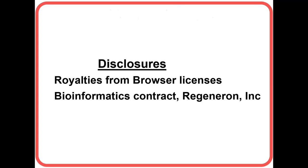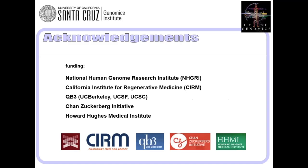We have some disclosures: we get royalties from the sale of browser licenses and we have a contract with a company for which we built some software and data sets, most of which wind up in the browser anyway. I want to start with acknowledgements because I'm going to move to a live demo quickly and usually forget to go back to them. Most of our funding comes from the US NIH National Human Genome Research Institute, with some funding from other sources as well.